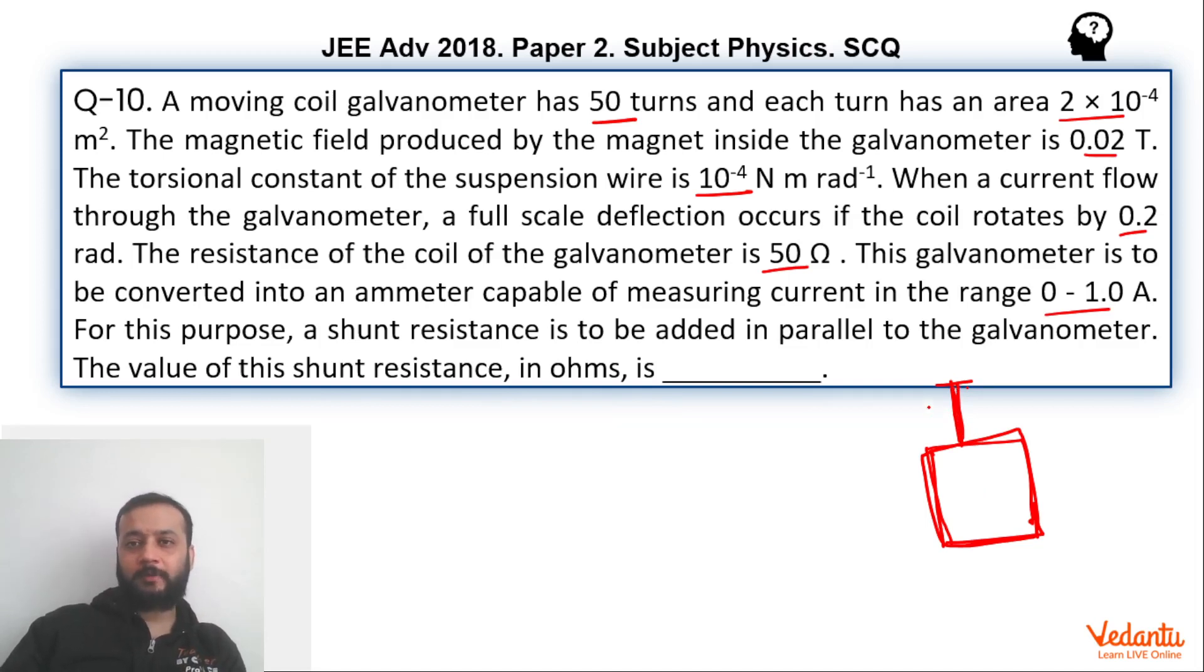Under the case of equilibrium, let's say the maximum current is being passed. In that case, we will get maximum deflection, which is 0.2 given in the question. If you recall, the magnetic torque is given by NiAB. This is the magnetic torque, M cross B, magnetic moment cross magnetic field.